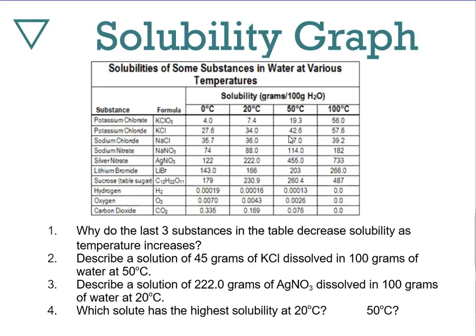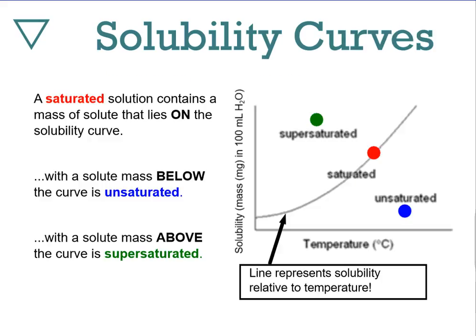Describe a solution of 222 grams of silver nitrate in 100 grams of water at 20°C. Silver nitrate's solubility at that temperature is exactly 222 grams, so this would be a perfectly saturated solution. Which solute has the highest solubility at 20°C? That would be sugar (sucrose). At 50°C, it would be silver nitrate, which shows the most dramatic increase in solubility with temperature. These are trends to expect, but they are not absolute — some substances don't increase in solubility with temperature.